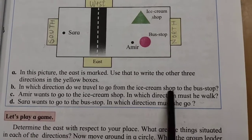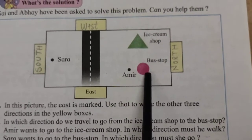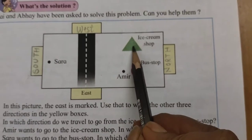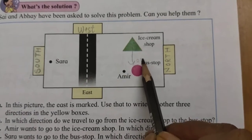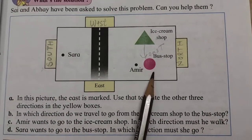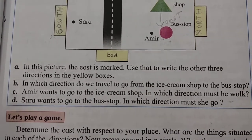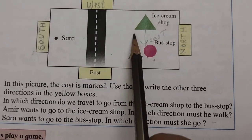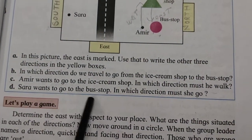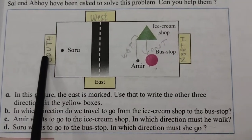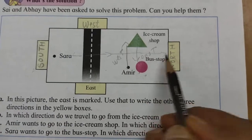In which direction do we travel to go from the ice cream shop to the bus stop? The ice cream shop is in the West direction, so from West we go to the East direction — the bus stop is in the East. Amir wants to go to the ice cream shop; he is in the East and will go West to get the ice cream. Sarah wants to go to the bus stop — she is in the South direction and will move North.